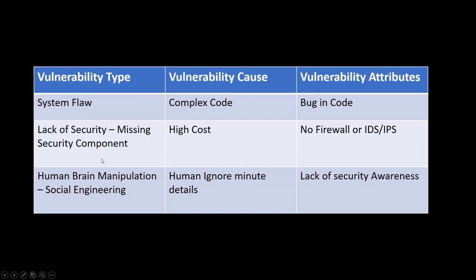The next vulnerability type is a missing security component. For example, if you own a small company with a limited budget, you do not have the resources to equip a large number of firewalls, IDS, and IPS — which are the first line of defense. Because of the high cost, you equip fewer security components, which creates a lack of security, and someone will definitely be able to intrude into your company and perform malicious activities.